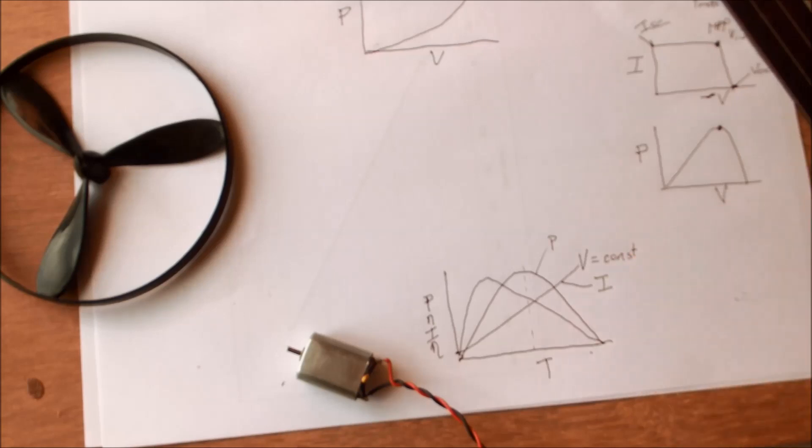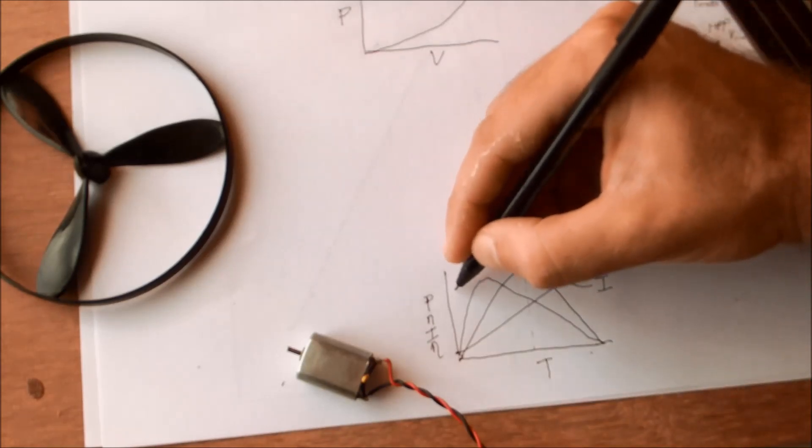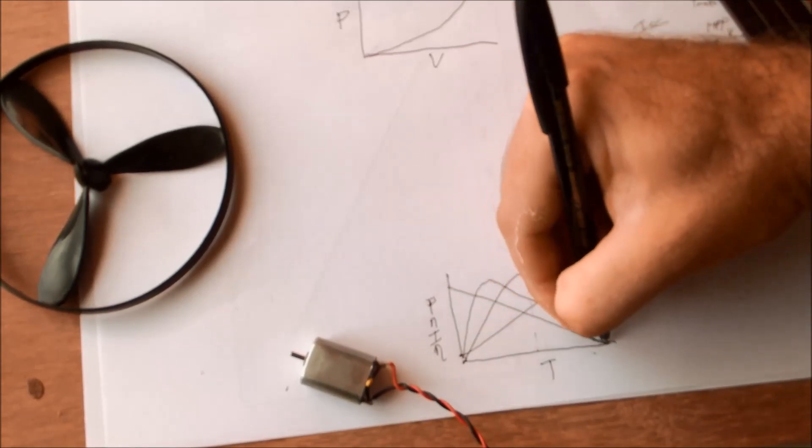Current on that curve over there and speed would be the inverse of that.